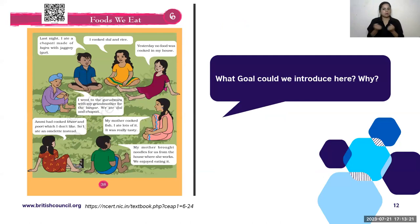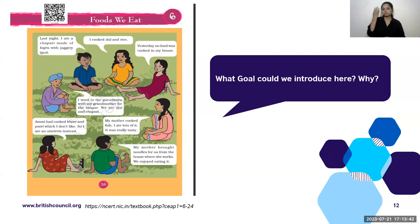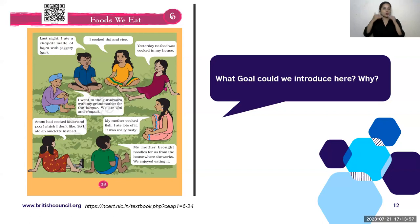Here is a clip from a Class 3 Environmental Studies text titled 'Foods We Eat.' Some children have a conversation: one boy says he ate a chapati made of bajra with jaggery; another says his mother brought noodles from the house where she works; a third child says yesterday no food was cooked in their house. Considering these conversations, what SDG goal could we introduce here, and why? Please share your answers in the chat box.